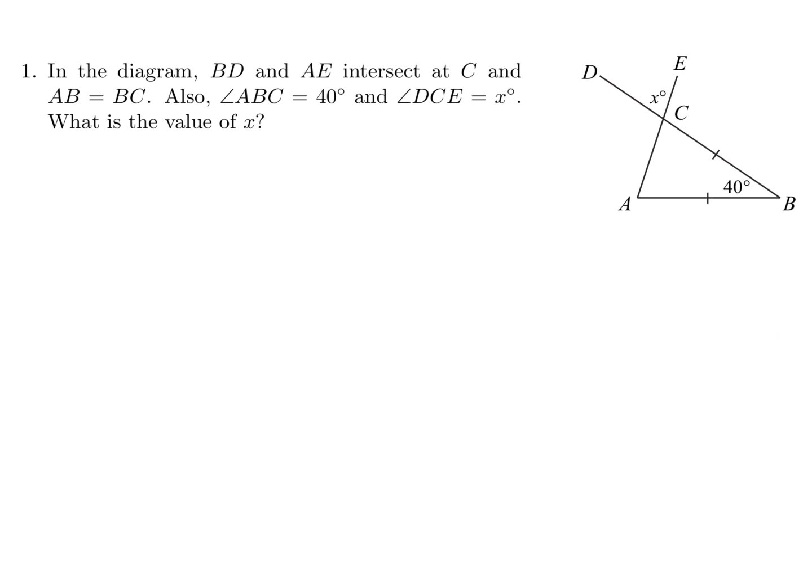In the diagram, BD and AD intersect at C and AB is equal to BC. Also, angle ABC is 40 and angle DCE is X. What is the value of X?